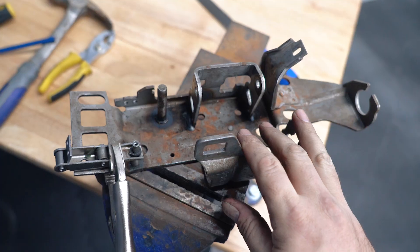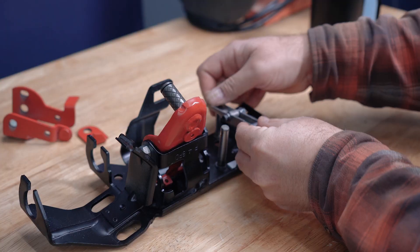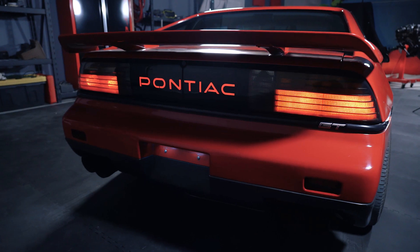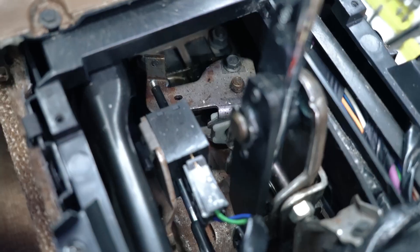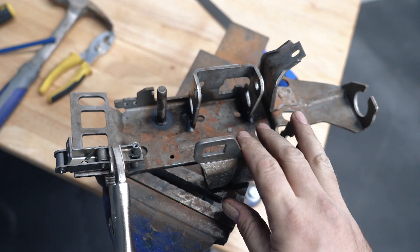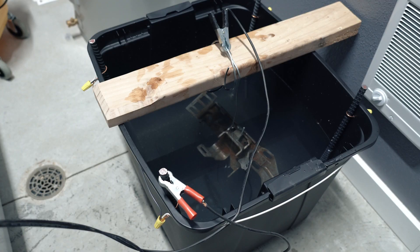I'm Ryan, this is BroBuilds, and that is one rusty shifter. I recently rebuilt the shifter assembly on my 1986 Pontiac Fiero. There's a pretty good amount of rust on the shifter assembly, and it's a fairly complex shape, so I decided to get rid of the rust using an electrolysis bath.